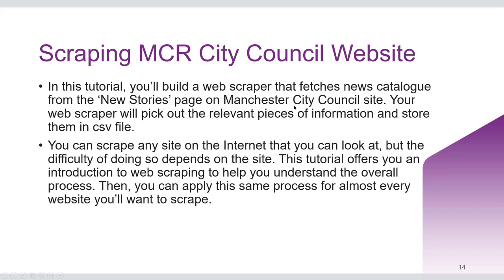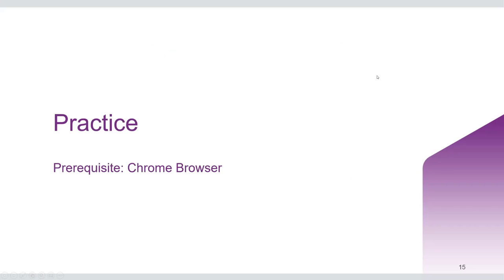In this tutorial, you will build a Web Scraper that fetches a news catalog from the news story page on the Manchester City Council site. Your Web Scraper will pick out the relevant pieces of information and store them in CSV files. You can scrape any site on the internet that you can look at, but the difficulty depends on the site. This tutorial offers an introduction to web scraping to help you understand the overall process, and then you can apply the same process to almost every website you want to scrape. All these tasks are going to take place in the Chrome browser.